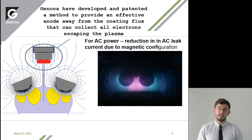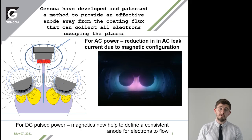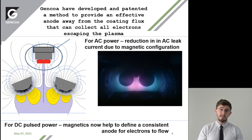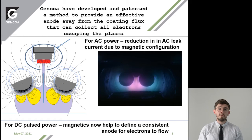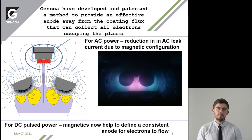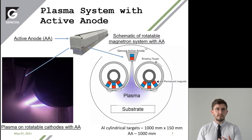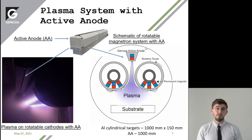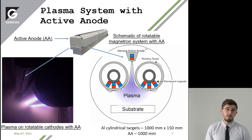We've now reduced this AC current leak due to the magnetic configuration. For DC pulsed systems, the other benefit is defining a consistent anode for electrons to flow to during reactive processes. In reactive processes, the walls can be coated with dielectric and you get this disappearing anode effect. Here's the schematic of the plasma system with the active anode, which we produce.